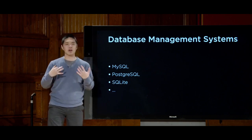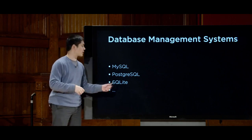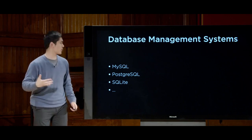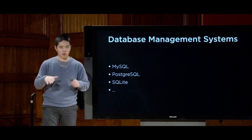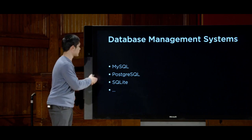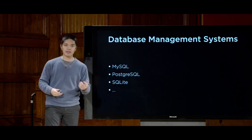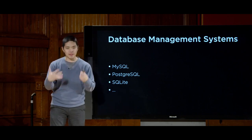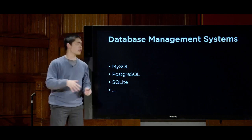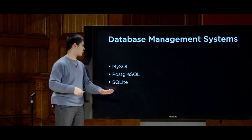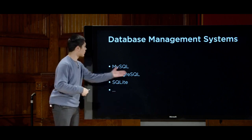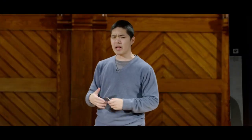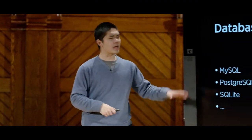SQLite is a simpler, lighter-weight implementation of the SQL standard. Rather than being an entire server listening for requests and making responses, SQLite is just going to store all of its data as a single file. That makes it a little bit easier for us, as we're just getting started, to begin writing queries and adding things to our database. SQLite is Django's default, and many of the same SQL syntax concepts apply to other database management systems too.